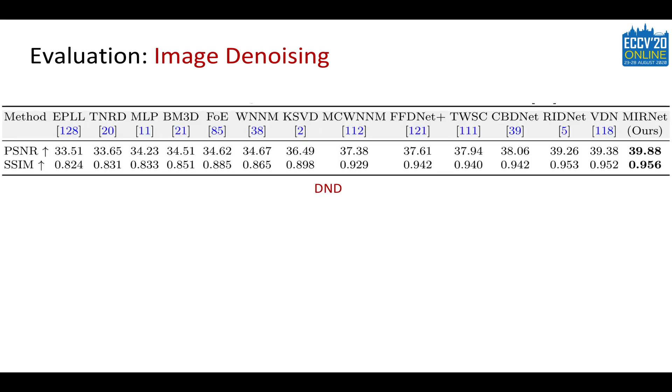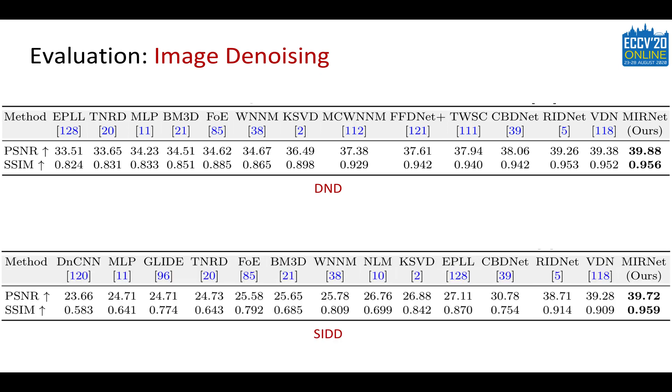This table shows the results for the DND benchmark where our method performs better than other competing approaches. Specifically, when compared to the previous best algorithm VDN, our method provides 0.5 dB PSNR gain. The trend is similar on the SITT benchmark.